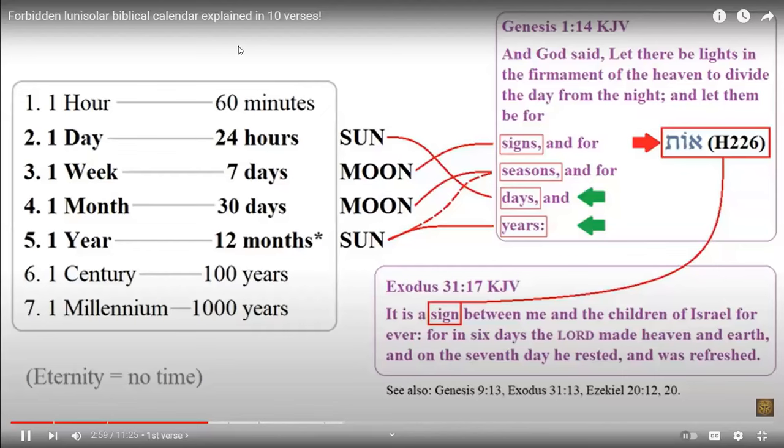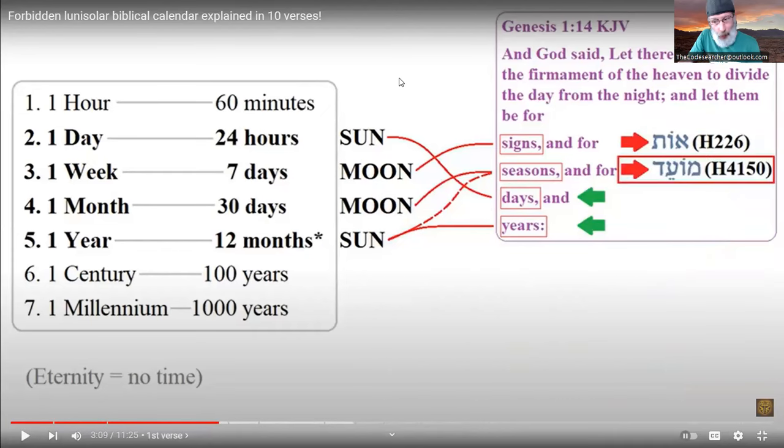The same Hebrew word for signs can be found in Exodus and explains what exactly a sign is: 'It is a sign between me and the children of Israel forever: for in six days the LORD made heaven and earth, and on the seventh day he rested.' At this point, with the lunisolar calendar we follow two witnesses. We don't just follow the sun, we don't just follow the moon—we follow both witnesses that the Father gave us from Genesis to give us our signs, seasons, days and years.